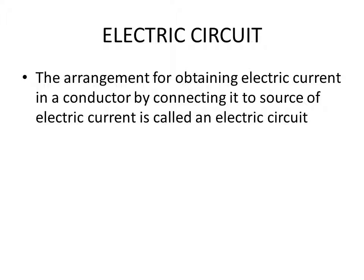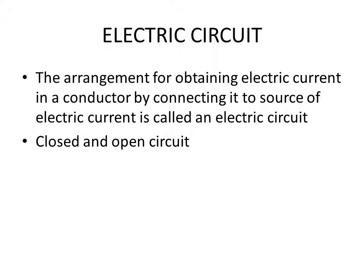There are two types of circuits: closed circuit and open circuit. Current flows only if the circuit is complete or closed. If the circuit is broken or incomplete, the current does not flow. For an electric circuit to be completed, every part of it must be made of conductors. If there is an insulator in the path, the circuit is said to be broken, incomplete, or open.